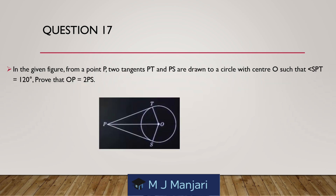Question 17. In the given figure, from a point P, two tangents PT and PS are drawn to a circle with centre O such that angle SPT is equal to 120 degrees. Prove that OP is equal to 2 times PS.